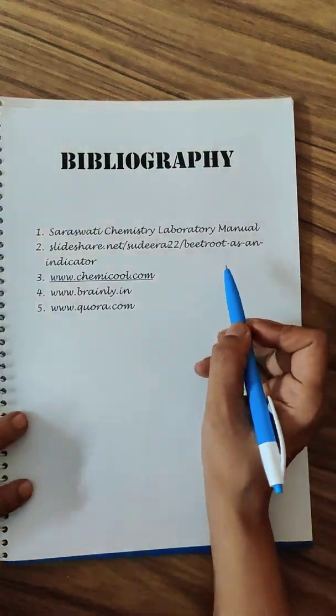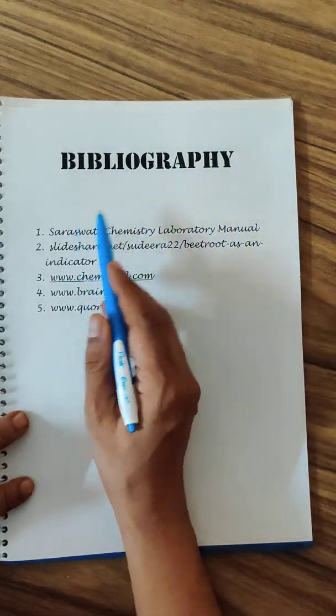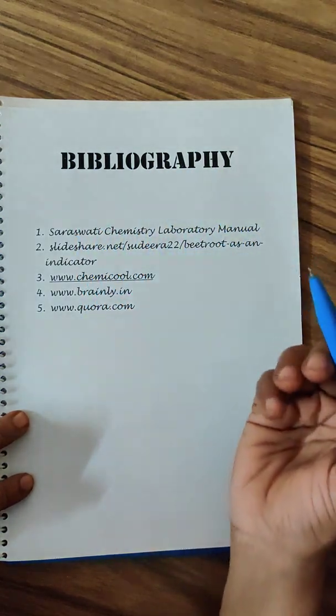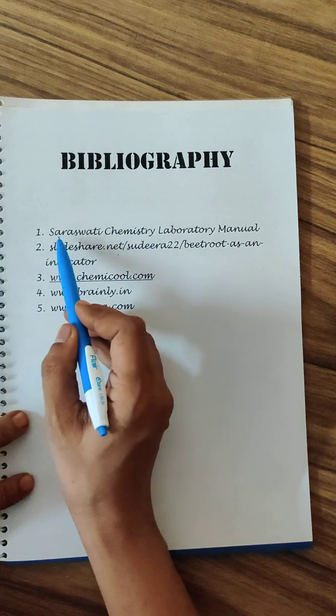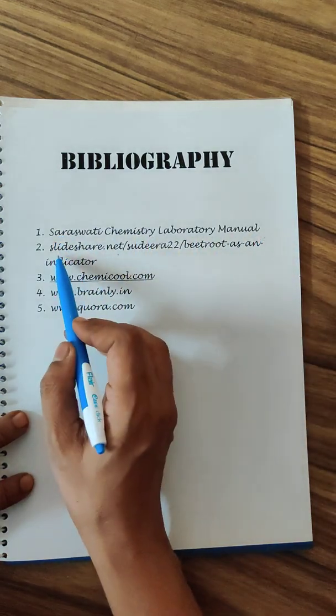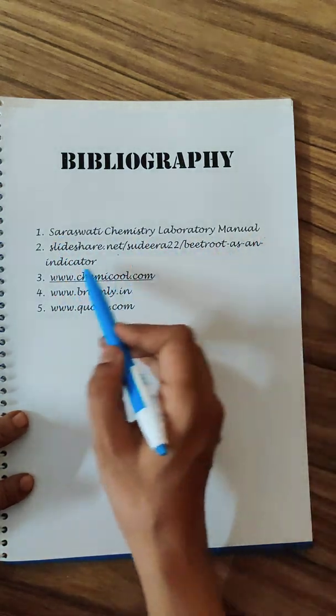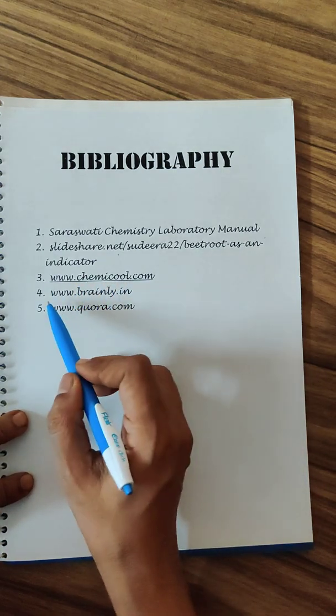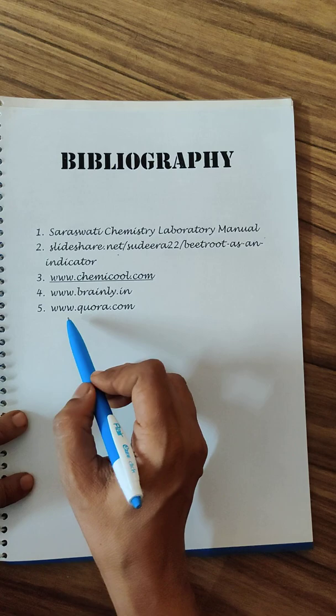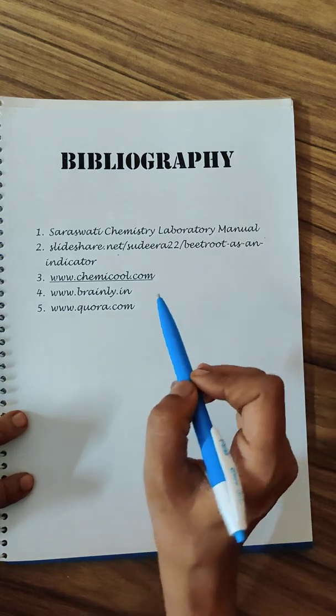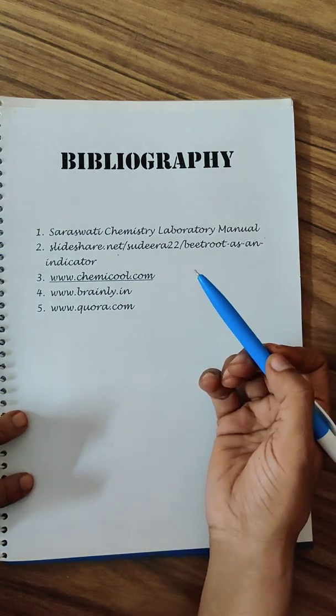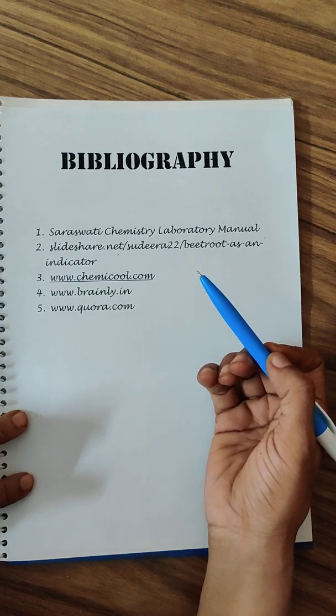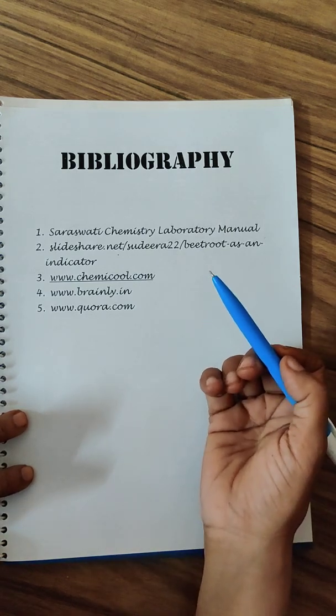The last page of your project is the bibliography where you will mention what resource materials have you used. This student has used Saraswati chemistry lab manual, SlideShare from the net for the beetroot indicator, www.chemicool.com, www.brennelly.in, www.quora.com are the websites that she has used from the net.